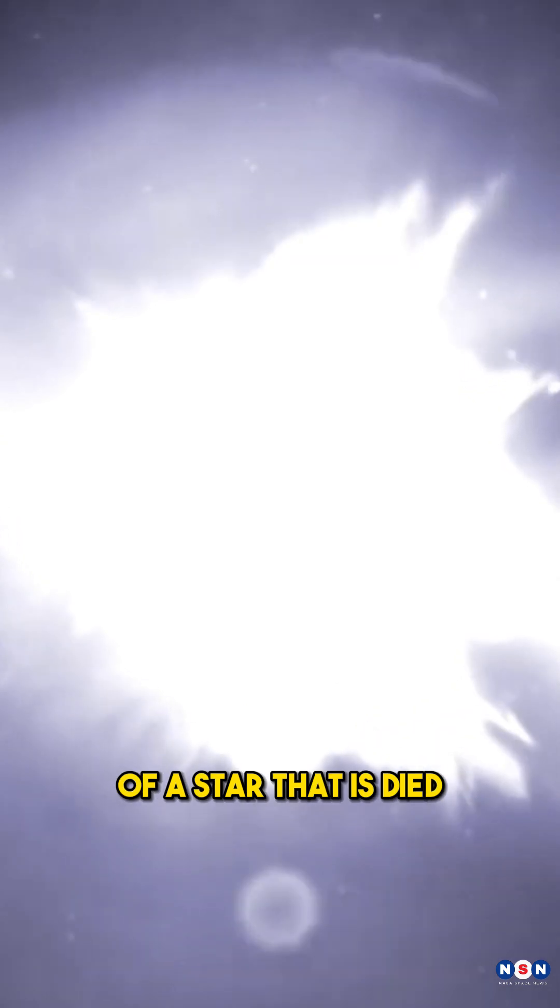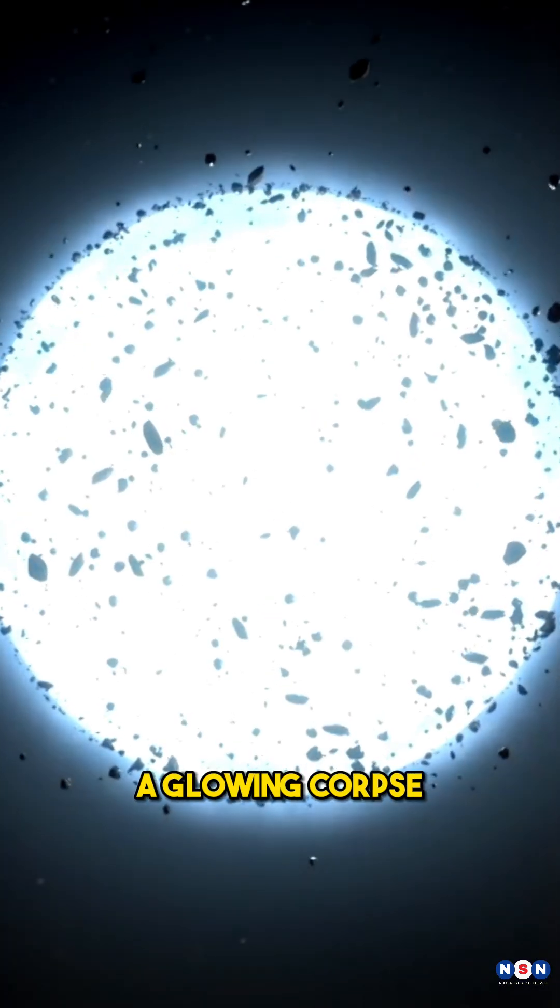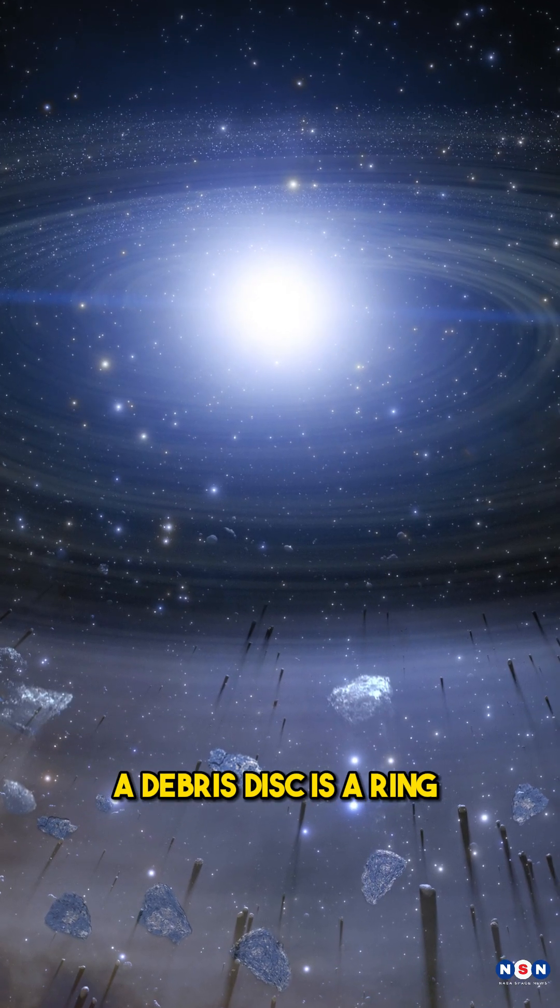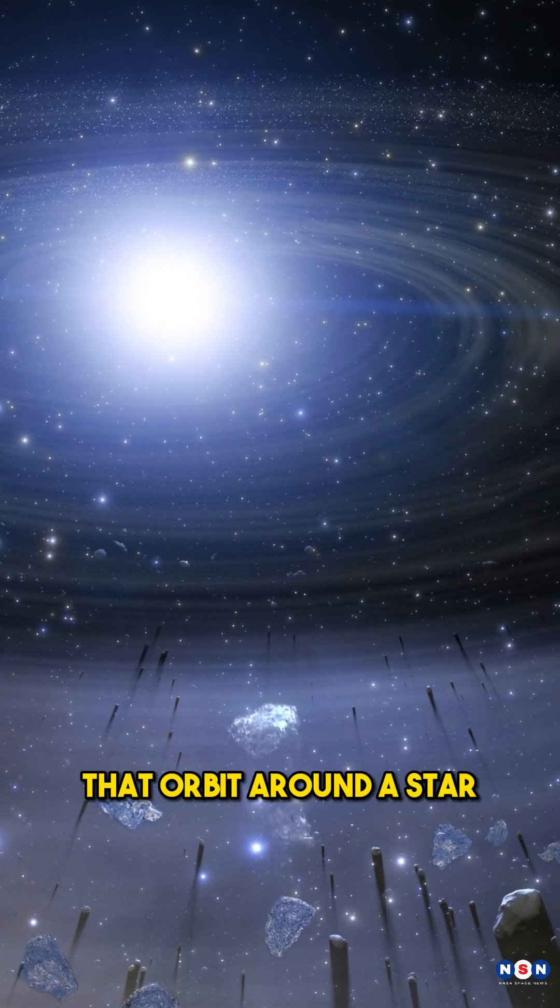A white dwarf is the remnant of a star that has died and left behind a glowing corpse. A debris disk is a ring of dust and rocks that orbit around a star.